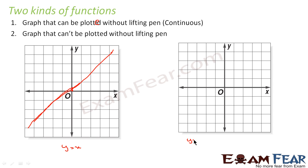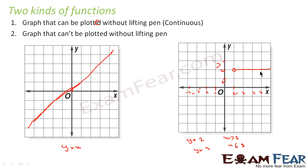Let's take one more example. Consider a graph where y = 2 for x greater than 1, and y = 3 for x less than or equal to 1. For x > 1, the value is 2 (with 1 not included), and for x ≤ 1, the value is 3. If you try to plot this graph, you have to lift your pen because there is a break at x = 1.